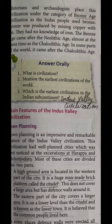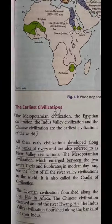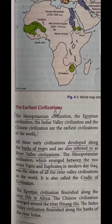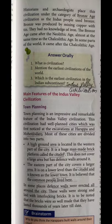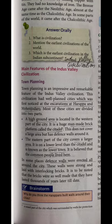The next question: mention the earliest civilizations of the world. Along with the Indus Valley Civilization, other civilizations also existed. The earliest civilizations are: Mesopotamian Civilization, Egyptian Civilization, Indus Valley Civilization, and Chinese Civilization. The next question: which is the earliest civilization in the Indian subcontinent? When we discuss the Indian subcontinent, we recall only one name — Indus Valley Civilization, which is related with the Indian subcontinent.